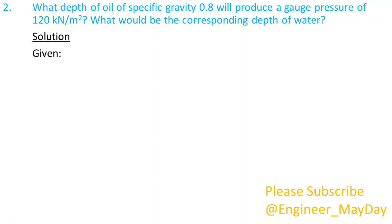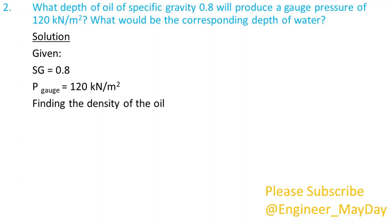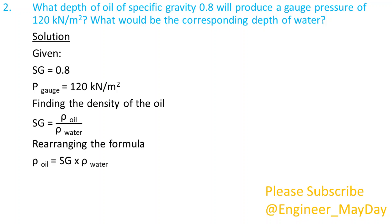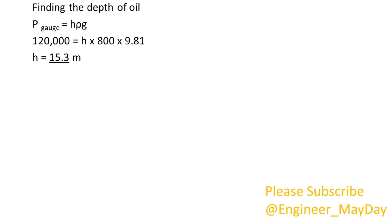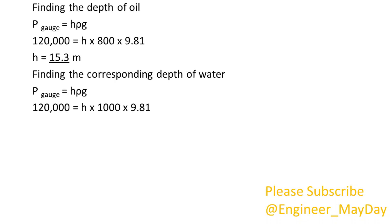Solution. Given: specific gravity equals 0.8, gauge pressure equals 120 kN per square meter. Finding the density of the oil: density of oil equals 800 kg per cubic meter. Finding the depth of oil: h equals 15.3 meters. Finding the corresponding depth of water: h equals 12.2 meters.